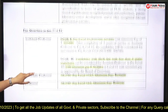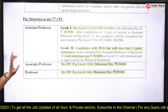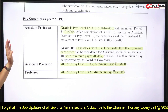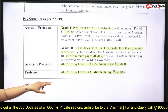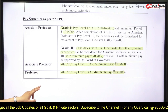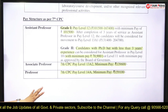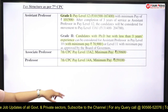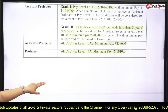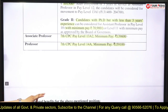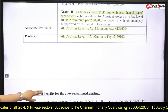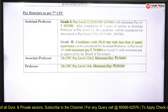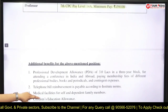The pay structure will be as per the 7th CPC. For assistant professor, they are going to pay Level 12. For associate professor, the pay level is 13 A2, and for professor, the level would be 14 A. The complete salary package details are mentioned in the notification.